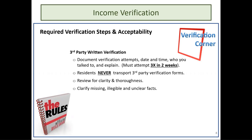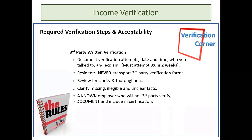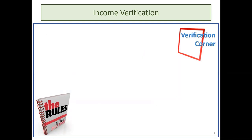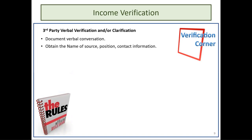Review the verification form for clarity and thoroughness, making sure it answers all questions. Any missing, illegible, or unclear facts need to be clarified with the third-party verifier. For a known employer who will not complete third-party verification, document this and include it in the certification. If they did not respond after three attempts or are known not to fill out third-party verification, you can proceed to the next step: third-party verbal verification.